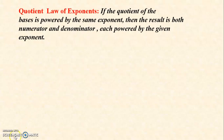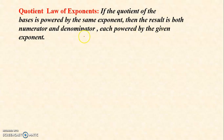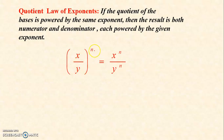This time we're going to discuss the quotient law of exponents. It says that if the quotient of the bases is powered by the same exponent, then the result is the numerator and denominator each powered by the given exponent. We have here x over y raised to n.